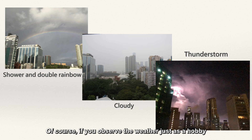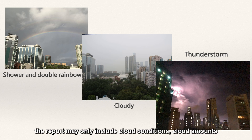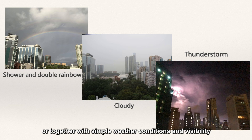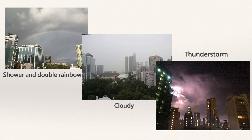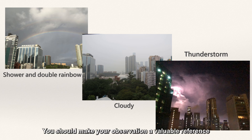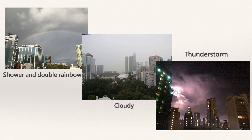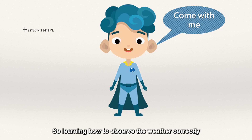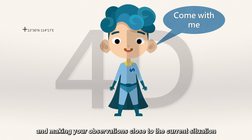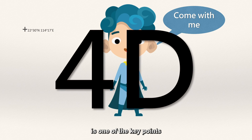Of course, if you observe the weather just as a hobby, the report may only include cloud conditions, cloud amounts, or together with simple weather conditions and visibility. However, how should you make your observations more meaningful? You should make your observation a valuable reference. I think that every weather report should have four dimensions of information. Learning how to observe the weather correctly and making your observations close to the current situation is one of the key points.